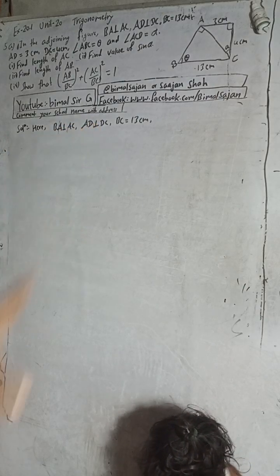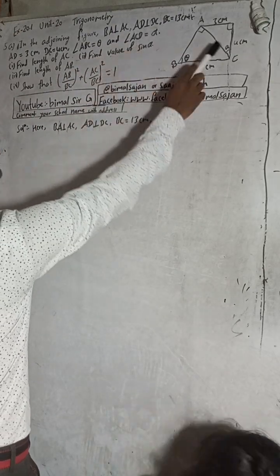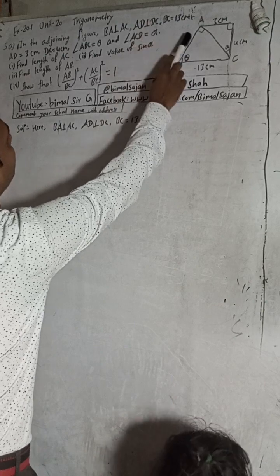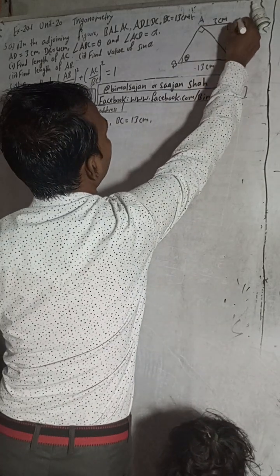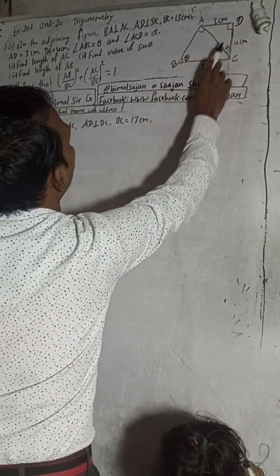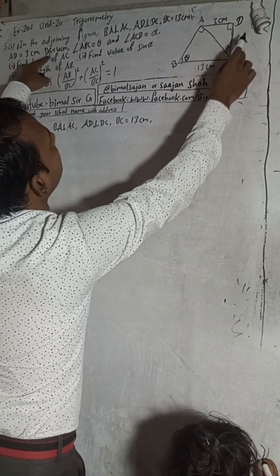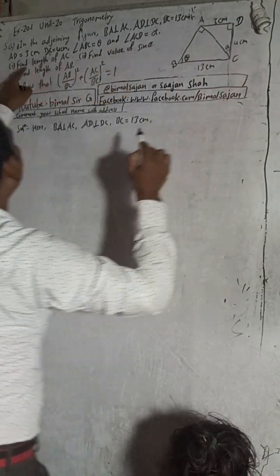Now I will start the solution. Follow the timestamps in the comments. In the adjoining figure, BA is perpendicular to AC, and AD is perpendicular to DC. BA is equal to 13 cm, AD is equal to 3 cm, and DC is equal to 4 cm. Angle ABC is theta and angle ACD is alpha. Find the length of AC.